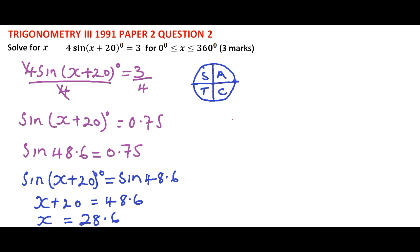We have to get this angle here. We say it is 180 minus 48.6. And when you subtract that, you get 131.4. Therefore, we have x plus 20 equals 131.4. We subtract 20 from both sides. We get x equals 111.4 degrees. That's another angle that satisfies our equation.